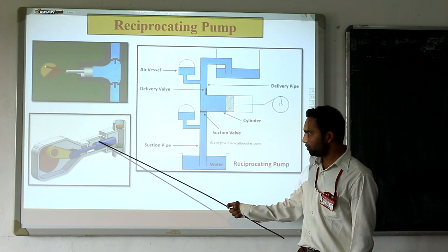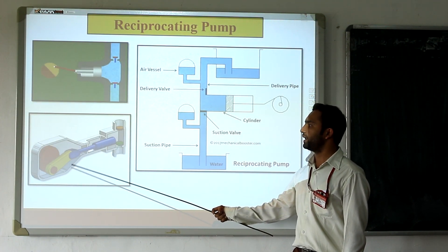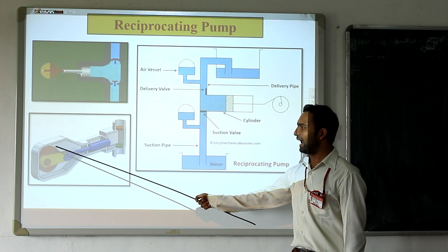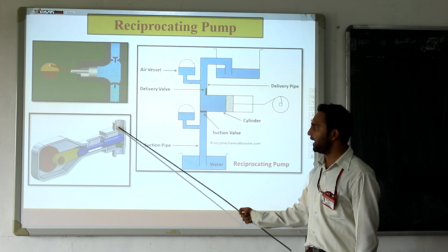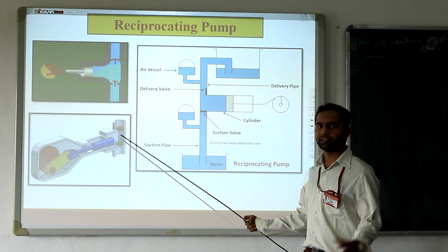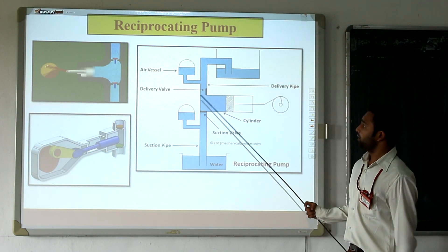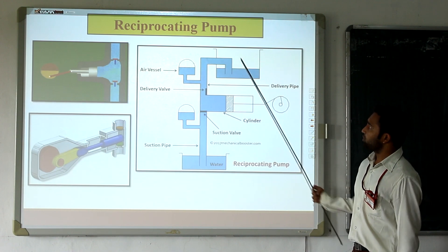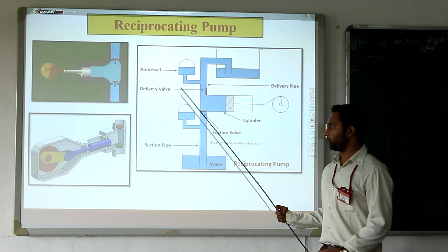Here, the movement of the piston, connecting rod, crank, and two valves — that movement should be noted. This is the construction of the reciprocating pump.